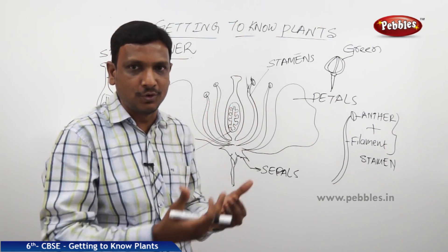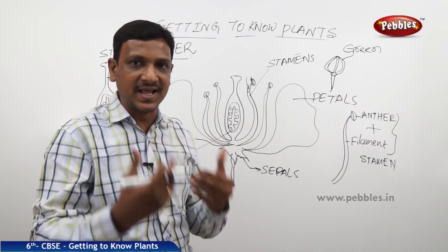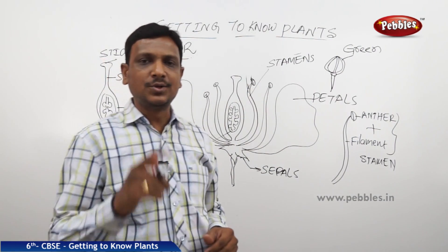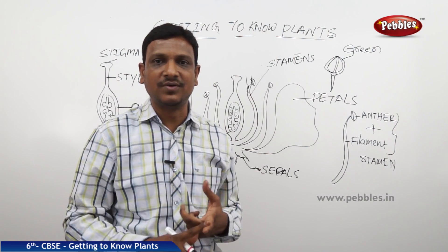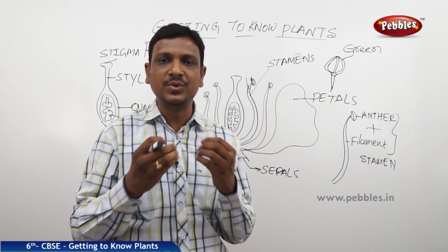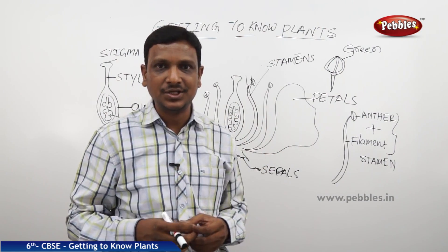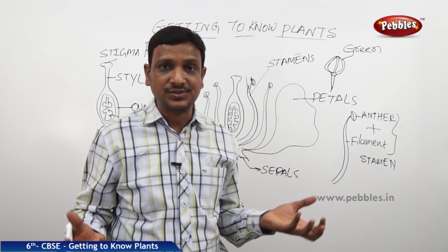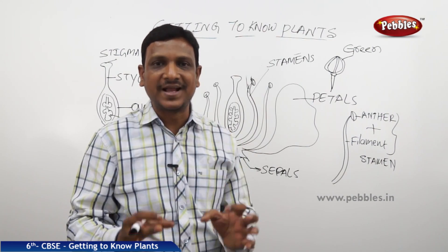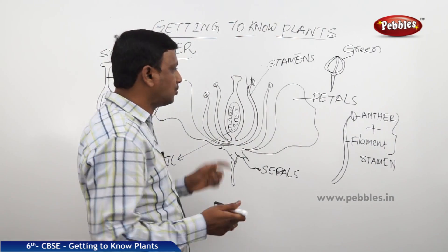How a flower changes into a fruit is a big story. When you study it in your higher classes — grades 7 and 8 — you will understand the function of each and every part of the flower. Now, the answers to our earlier questions: why do flowers have colorful petals and sweet fragrance? Flowers need the help of insects to turn into fruits, so to attract insects, flowers have colorful petals and a nice, sweet smell.